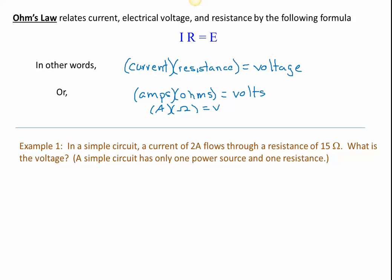Let's look at an example. We have a simple circuit where a current of 2 amps flows through a resistance of 15 ohms, and we would like to find the voltage. We have Ohm's Law: I times R equals E. The current is 2 amps, so I equals 2. The resistance is 15 ohms, so R equals 15. The voltage is unknown. This is just a straight multiplication: 2 times 15 is 30, so E equals 30. The solution is a voltage of 30 volts.